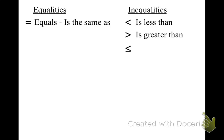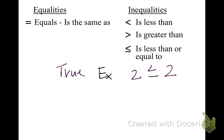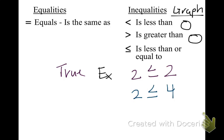Our next new symbol is less than or equal to. For example, 2 is less than or equal to 2 — this is a true statement because 2 is equal to 2. Another example: 2 is less than or equal to 4, which works because 2 is less than 4. So there are different ways it can be true. For your graph, you'll be doing it with a closed circle — I want both these examples as well as a closed circle in your notes.